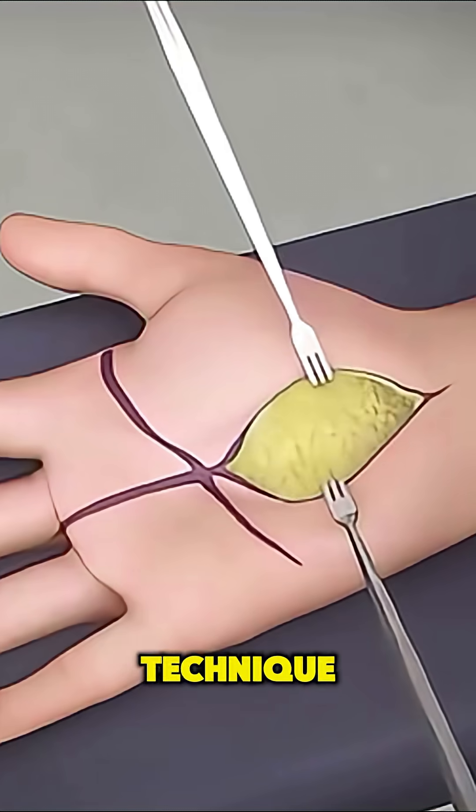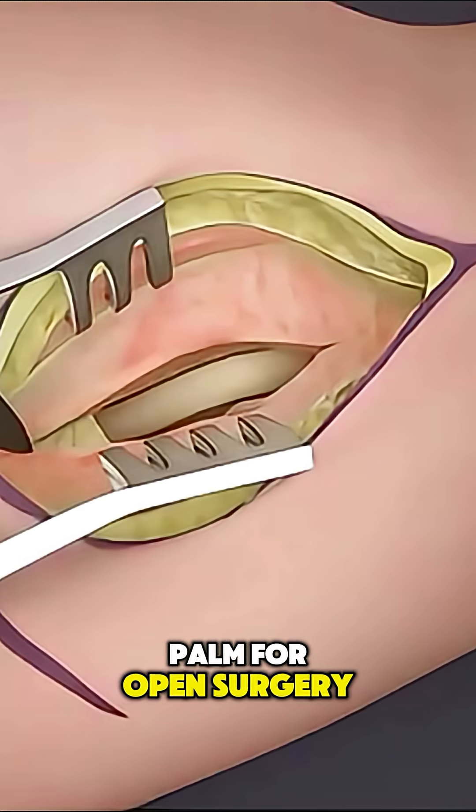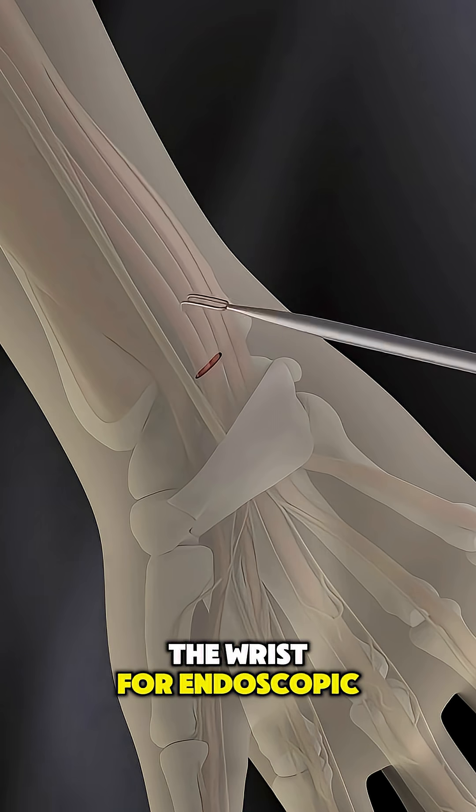Then, depending on the technique, they make either a small cut in your palm for open surgery or tiny incisions in the wrist for endoscopic surgery.